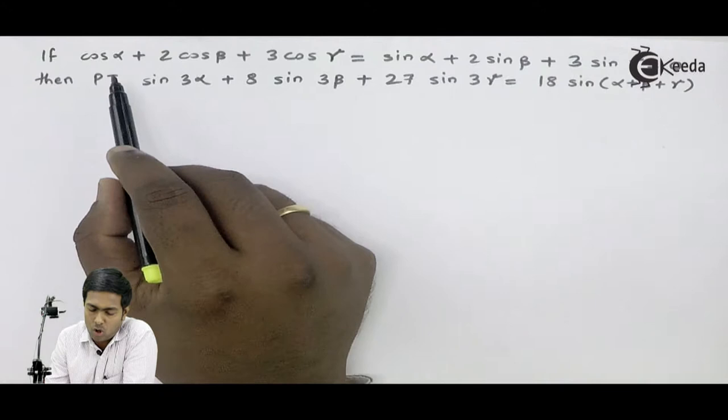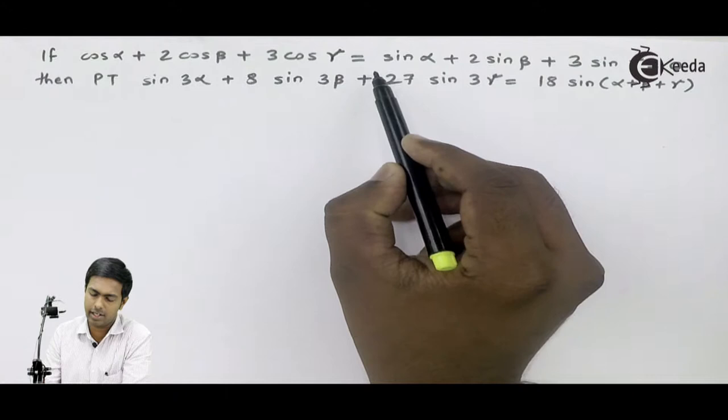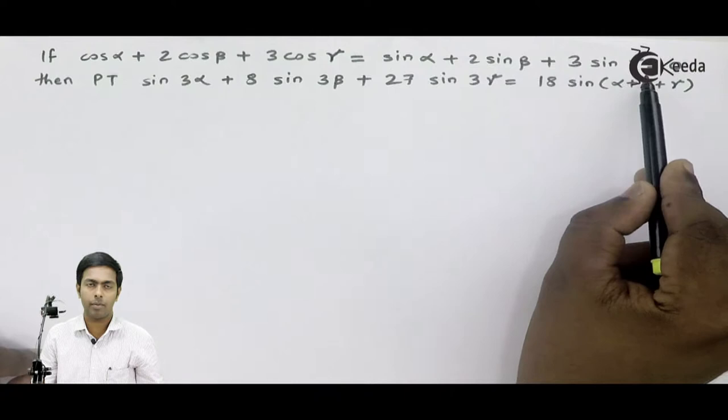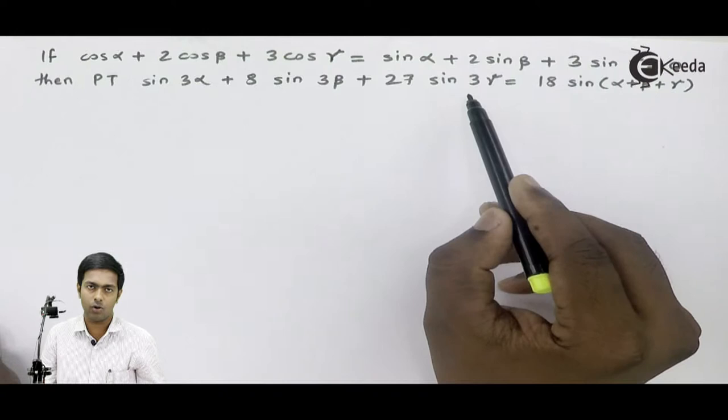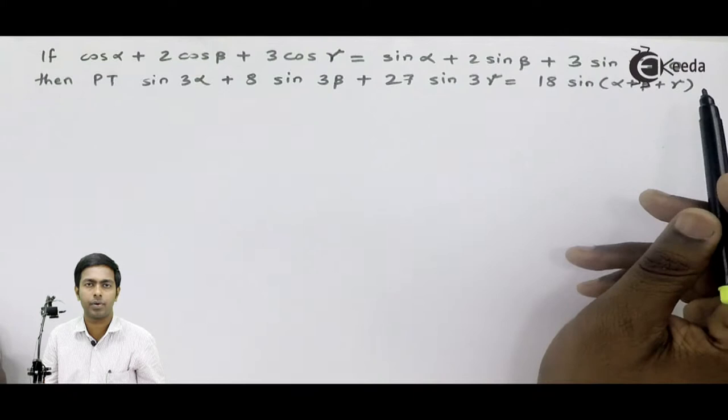The next problem is: if cos alpha plus 2 cos beta plus 3 cos gamma is equal to sin alpha plus 2 sin beta plus 3 sin gamma is equal to 0, then prove that sin 3 alpha plus 8 times sin 3 beta plus 27 times sin 3 gamma is equal to 18 sin of alpha plus beta plus gamma.